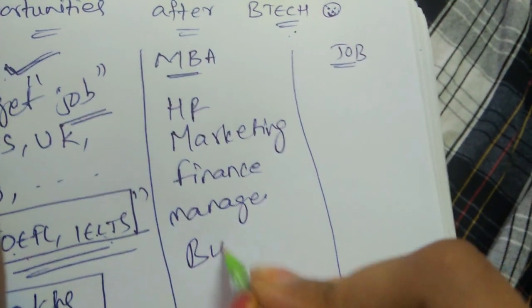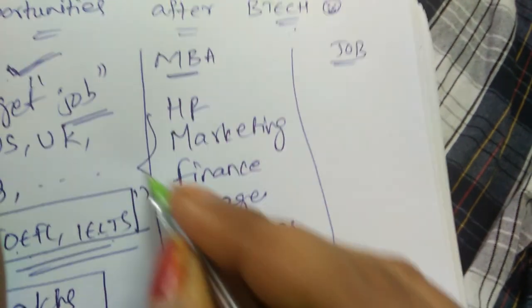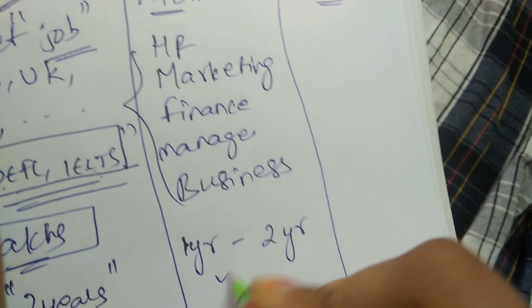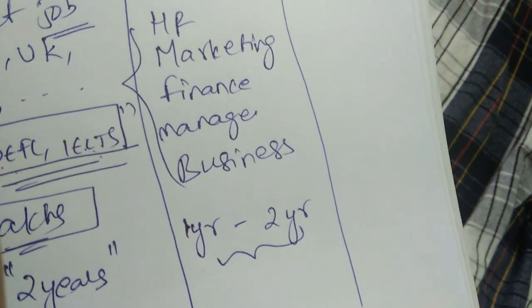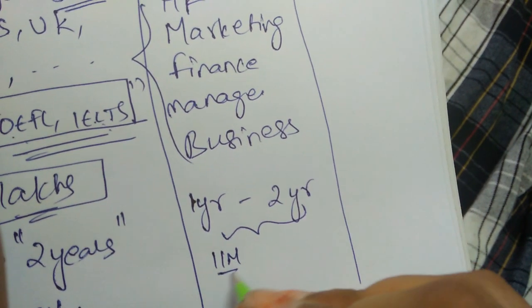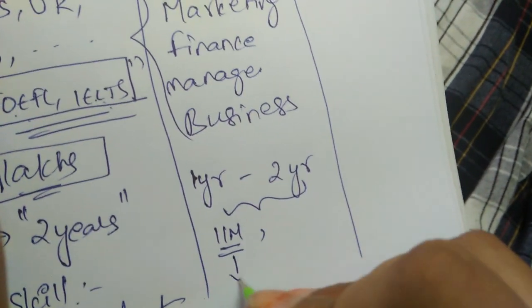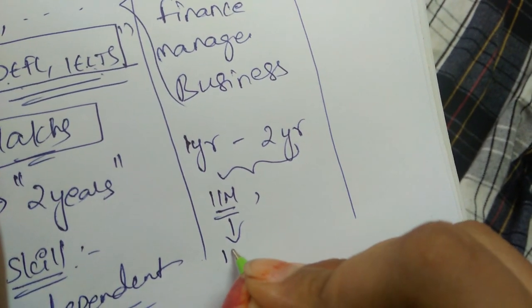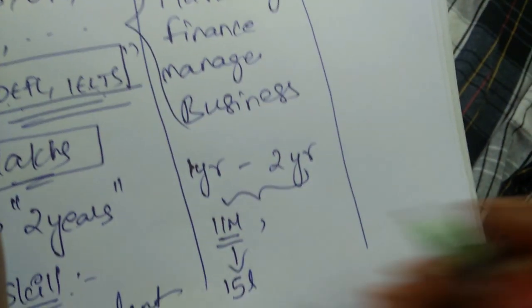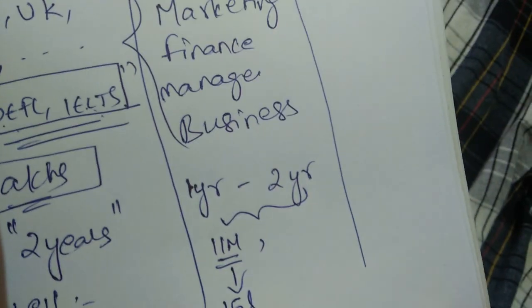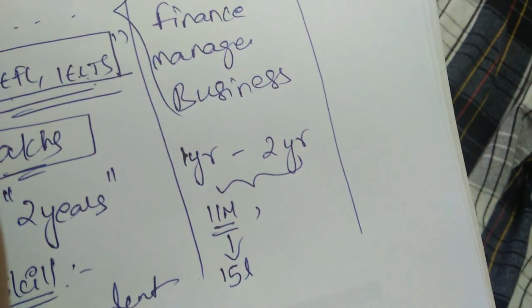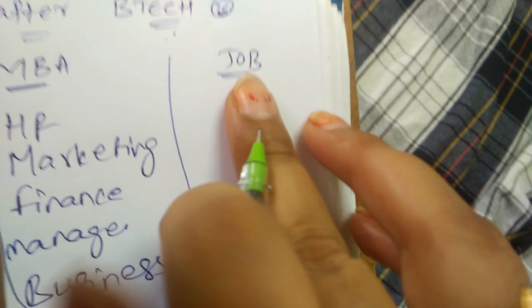MBA course duration will be one year to two years based on the college or based on the university you choose. For best MBA degree I suggest you to go for IIM. Coming to IIM fees will be above 15 lakhs based on your rank. If you want a good MBA certificate you can also go for foreign colleges or universities so that you can earn more money.